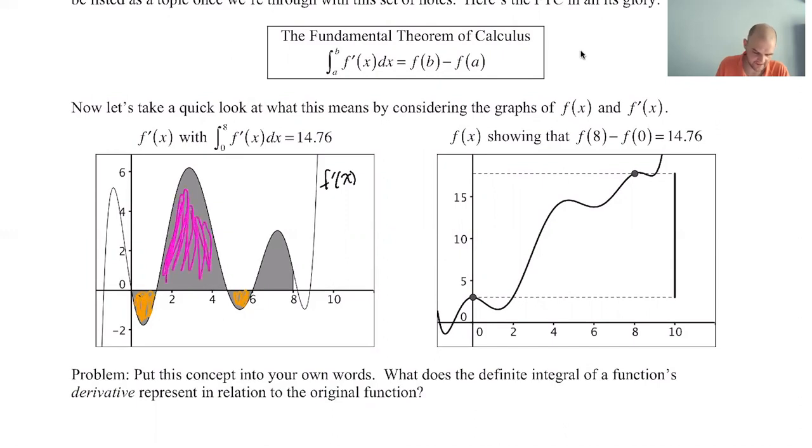You can see overall, the positives are way bigger than the negatives, and that's reflected in the total accumulated signed area, 14.76. So that's when you're looking at it geometrically. The other approach—what if we apply the fundamental theorem? So the integral of f' from 0 to 8 should be f(8) minus f(0).